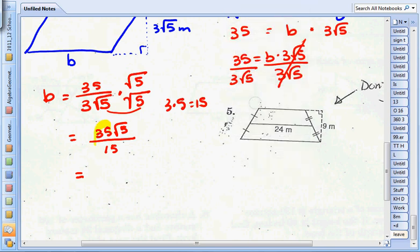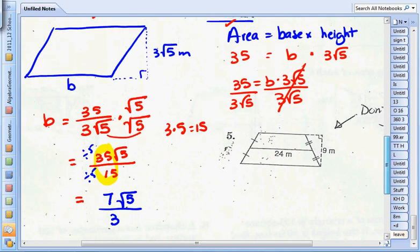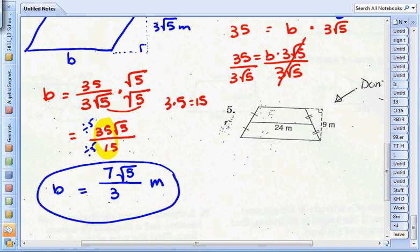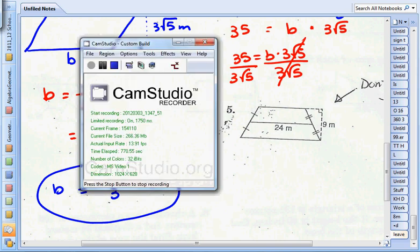Let's see, 35 and 15, those are both coefficients. I could divide out a 5 from both of them. So I'm going to divide out 5 from the top and the bottom. 5 goes into 35 seven times, 5 goes into 15 three times, and I still have that √5. One last thing, let's look for units. Units are meters. There's my answer: the base equals 7√5 divided by 3 meters.